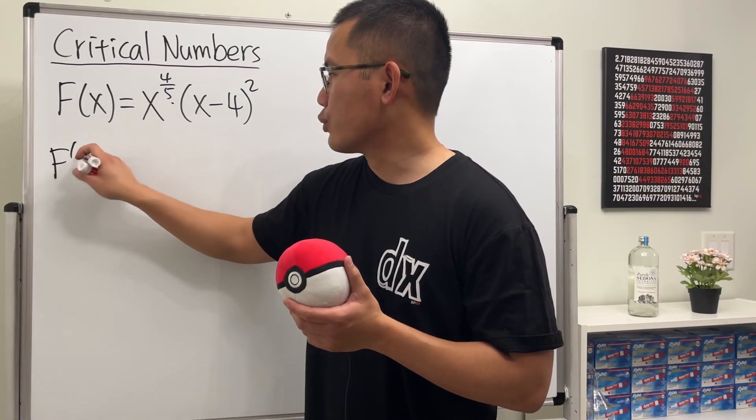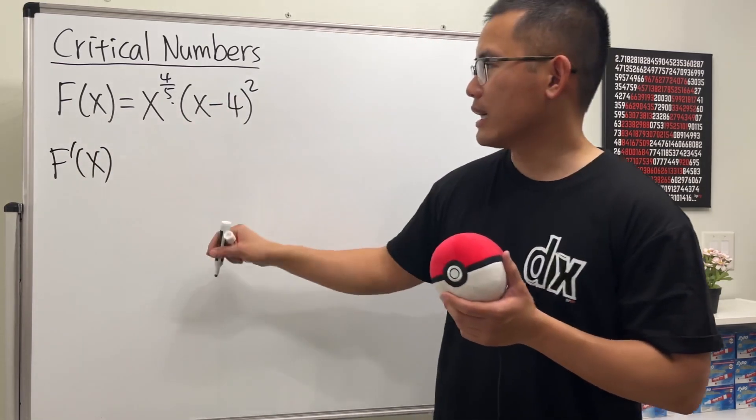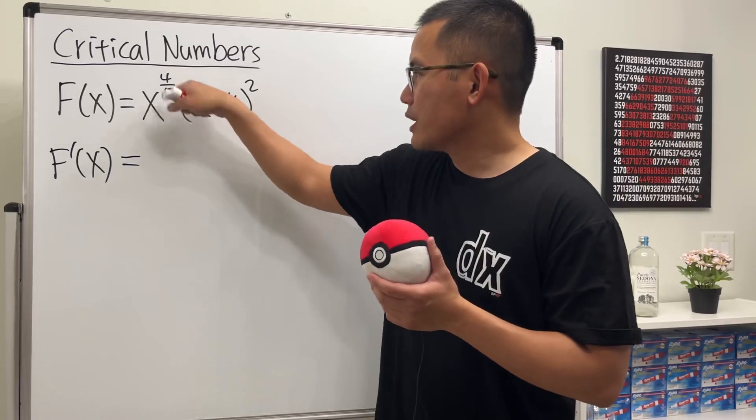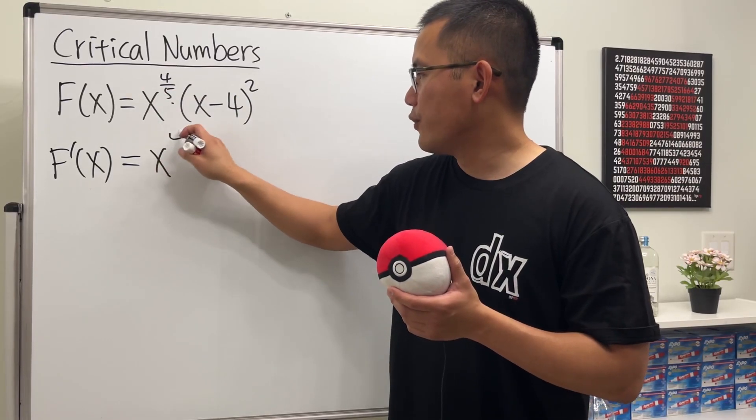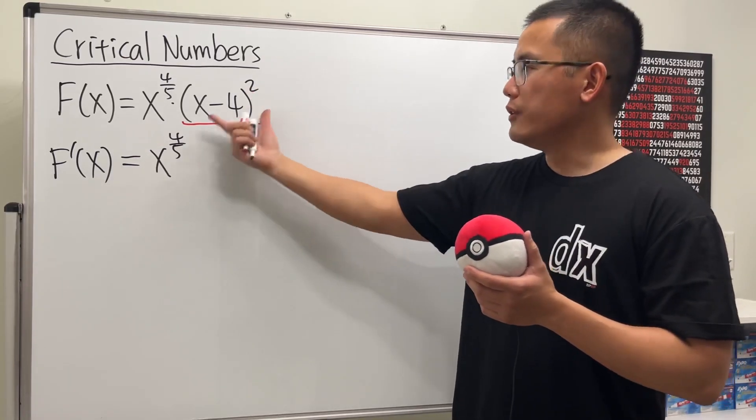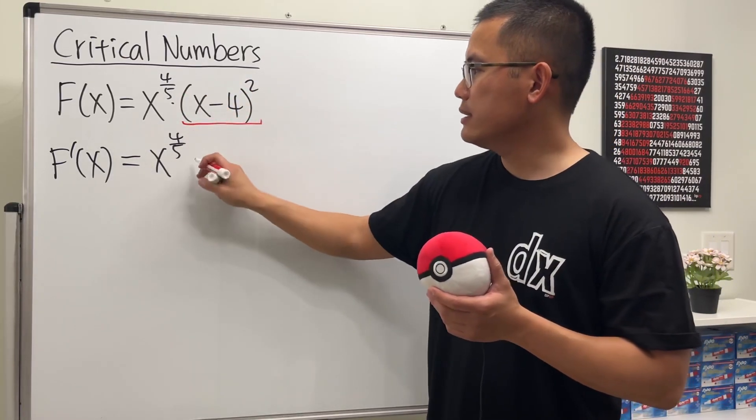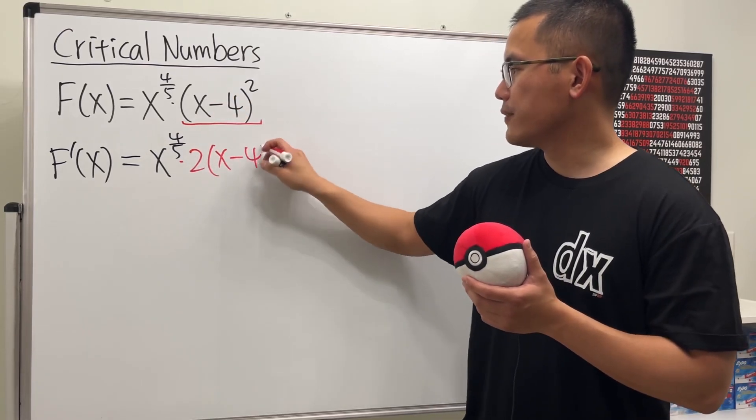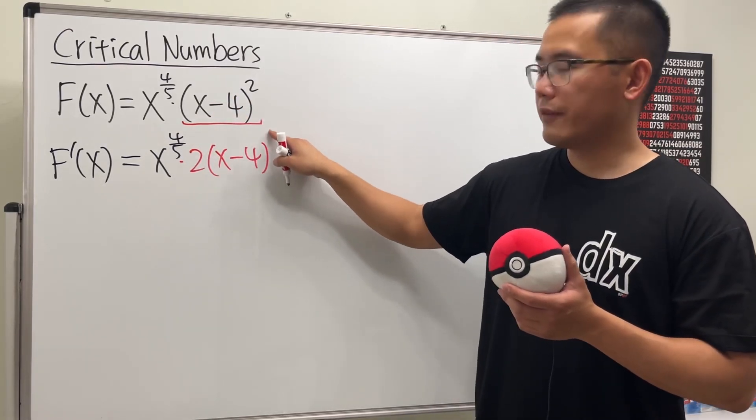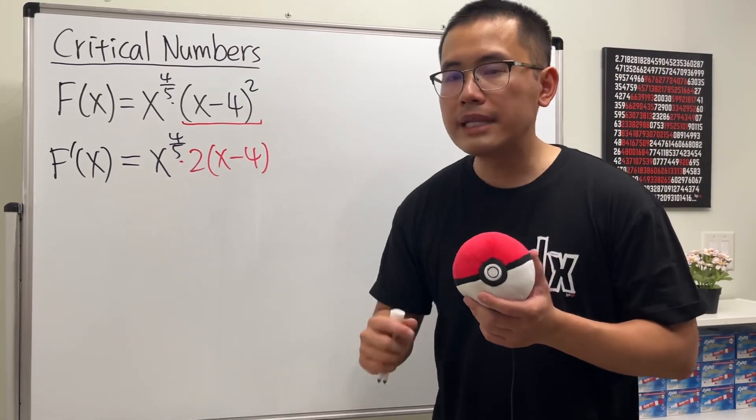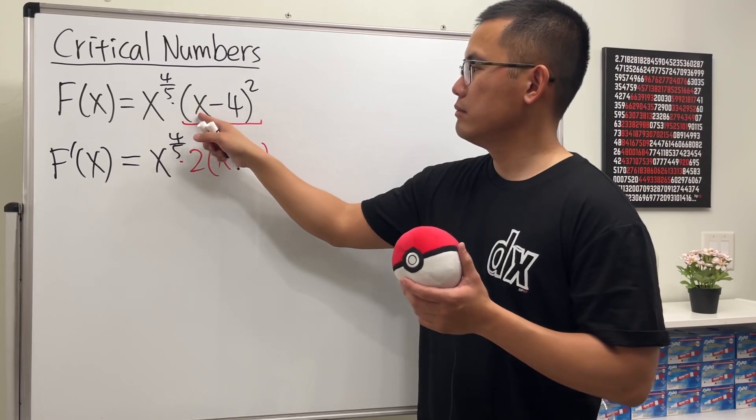I think it will be easier or more direct if we just use the product rule and the chain rule. I'm going to keep this as the first function, so x^(4/5), and here is the second function. To differentiate this, we put the 2 in the front, so we multiply by 2, and then the inside stays, which is (x - 4), and then 2 minus 1 gives us the first power. Technically we have to use the chain rule, but the derivative of the inside is just 1.